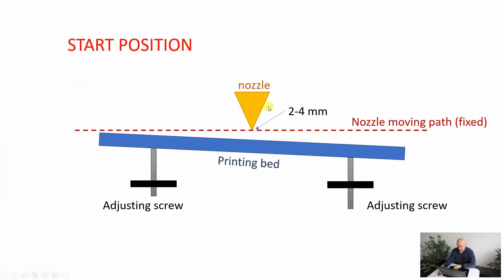What we have here is the nozzle, and this is the printing bed. You can see it is under an angle and approximately two to four millimeter distance from the nozzle. These are the adjusting screws and knobs, and with these I can move the printing surface up and down. This is the moving path of the nozzle which is fixed.